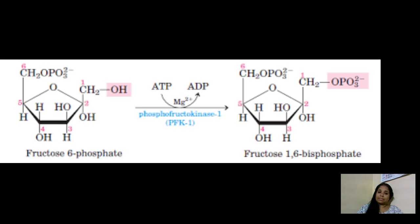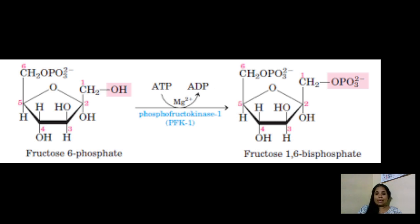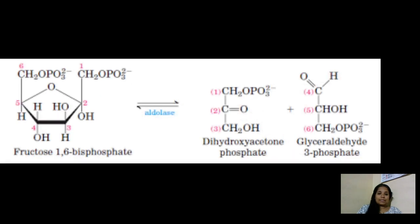The third step is again phosphorylation. Fructose-6-phosphate is attached with another phosphate group, this time added onto the first carbon, forming fructose-1,6-bisphosphate. This reaction is catalyzed by the enzyme phosphofructokinase-1, and the phosphate group is supplied by an ATP molecule, so another ATP is consumed in this step.